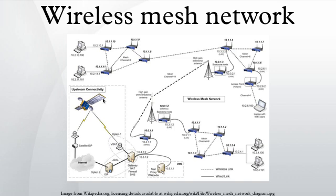Management: this type of infrastructure can be decentralized or centrally managed, both are relatively inexpensive, and very reliable and resilient, as each node needs only transmit as far as the next node. Nodes act as routers to transmit data from nearby nodes to peers that are too far away to reach in a single hop, resulting in a network that can span larger distances. The topology of a mesh network is also reliable, as each node is connected to several other nodes. If one node drops out of the network due to hardware failure or any other reason, its neighbors can quickly find another route using a routing protocol.